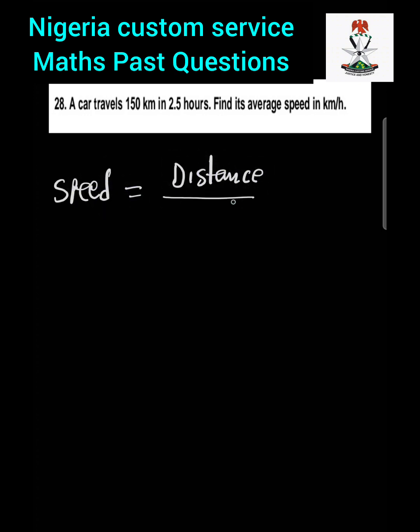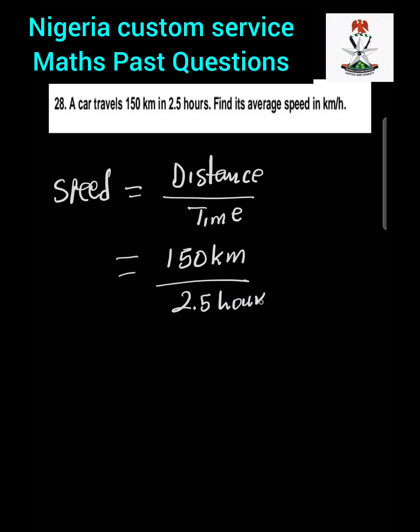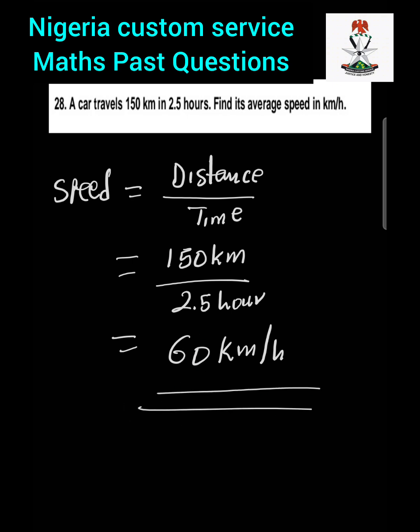Question 28: A car travels 150 kilometres in 2.5 hours. Find its average speed in kilometres per hour. The formula for speed is distance divided by time. The distance is 150 km and the time is 2.5 hours. Dividing 150 by 2.5 gives us 60 kilometres per hour, since 2.5 multiplied by 60 equals 150.